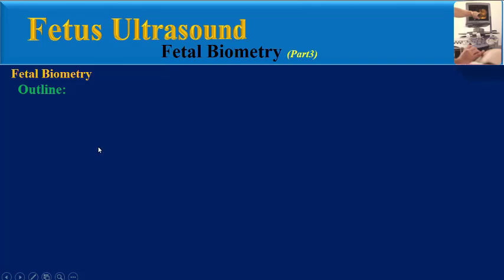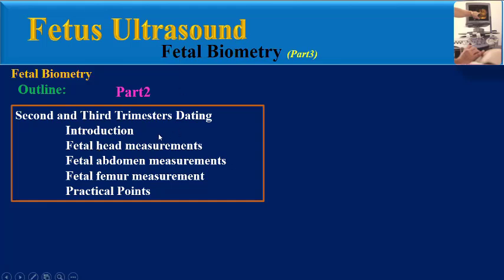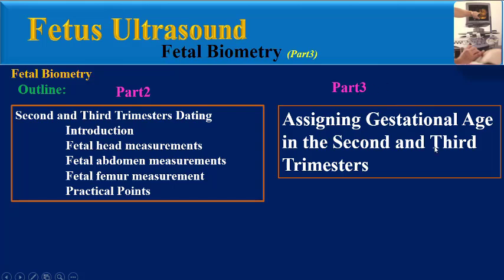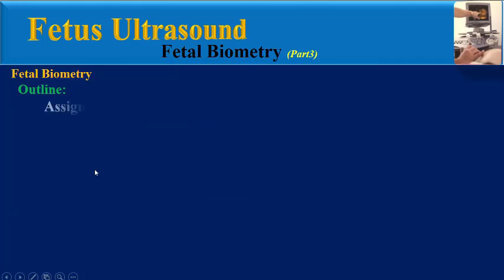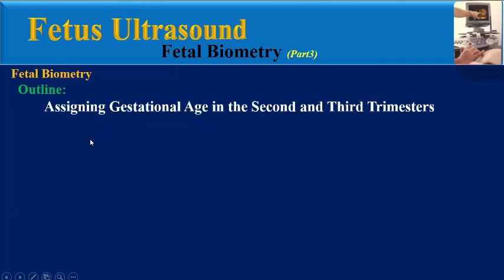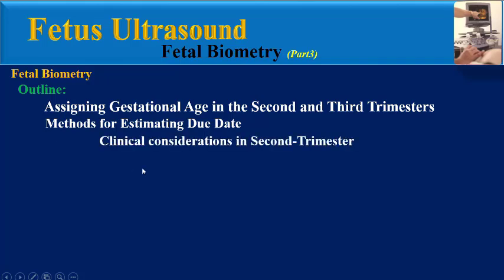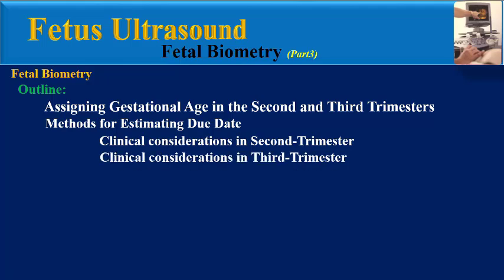This is the third video in this series, titled Fetal Biometry Part 3. In video Part 2, the technical points in fetal biometric parameter measurements were explained. In this video, it will be explained how to assign gestational age in the second and third trimester according to these measurements. The outline includes assigning gestational age, methods for estimating due date, clinical considerations in second and third trimesters, sub-optimally dated pregnancy, and final teaching points.